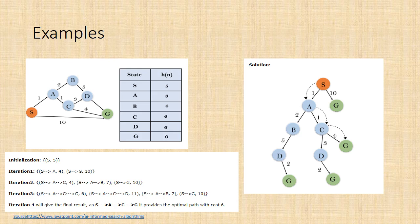Iteration 4 will give the final result, as S-A-C-G. It provides the optimal path with cost 6.